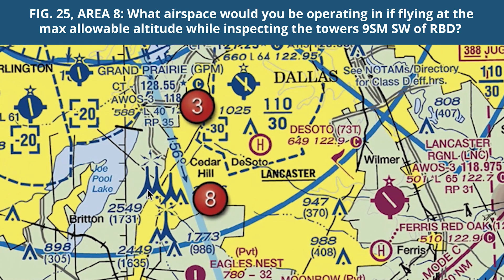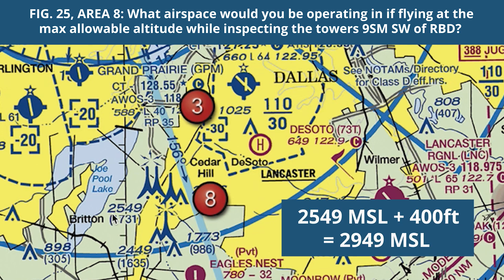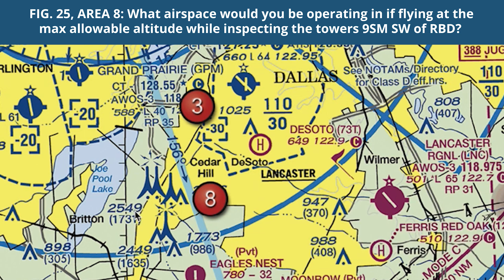How tall are these tower icons? We can see the numbers 2549 and 1731 — these are the altitude numbers for the towers. The question asks about maximum allowable altitude. The maximum allowable altitude is going to be 2549 feet MSL plus 400 feet, or 2949 feet MSL. It could also be 1731 feet AGL plus 400 feet, equaling 2131 feet AGL. So we have the MSL height and the AGL height — that's the maximum allowable altitude.